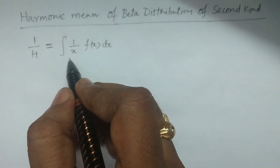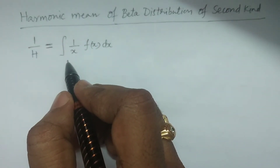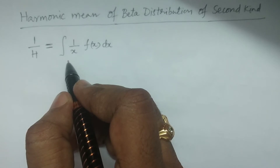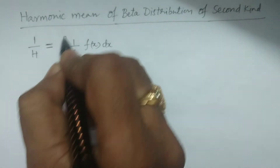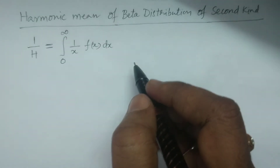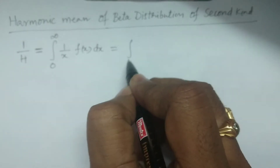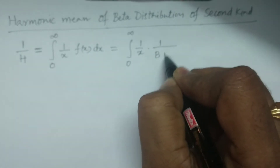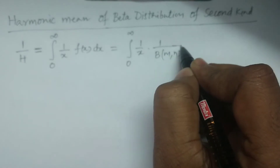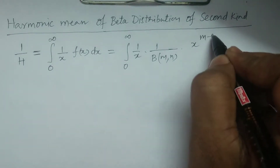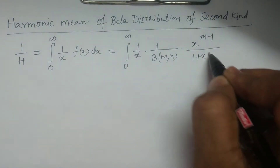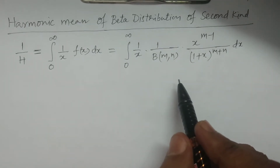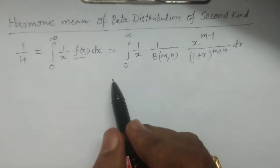Here, x is a beta distribution of second kind variate. The limits of beta distribution of second kind are 0 to infinity. The integral becomes: integral from 0 to infinity of 1 by x multiplied by the PDF, which is 1 by beta(m, n) multiplied by x power m minus 1 divided by 1 plus x whole power m plus n dx. This is the probability density function PDF f(x) of beta distribution of second kind.